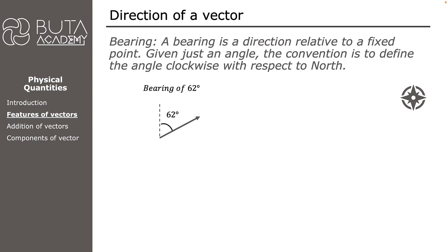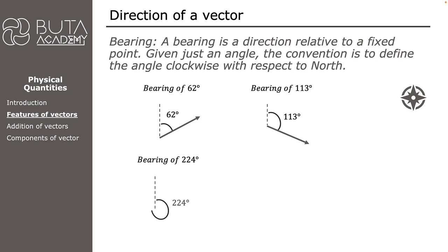We follow the same steps to draw a vector of bearing 113 degrees — first we measure an angle of 113 degrees with respect to north, then draw the vector. By repeating these steps we can draw a vector of bearing 224 degrees and a vector of bearing 287 degrees.